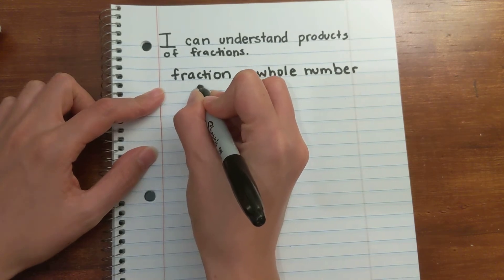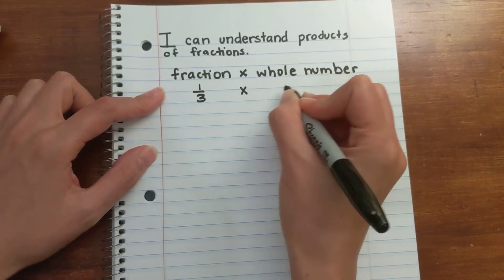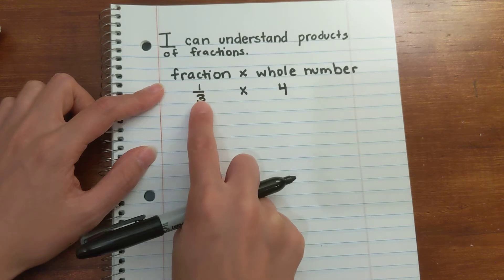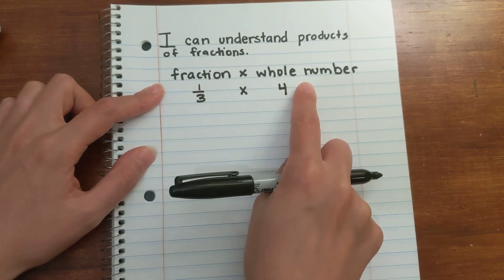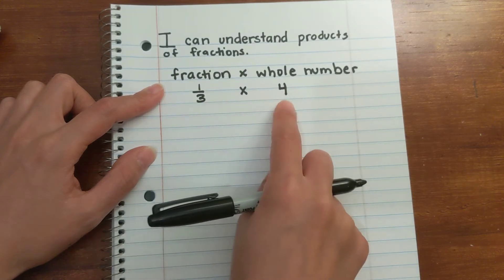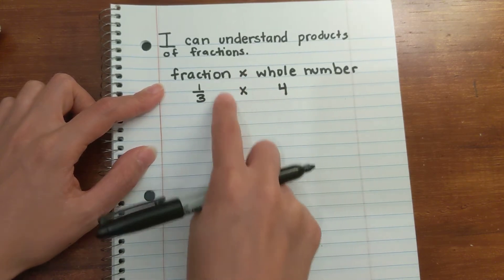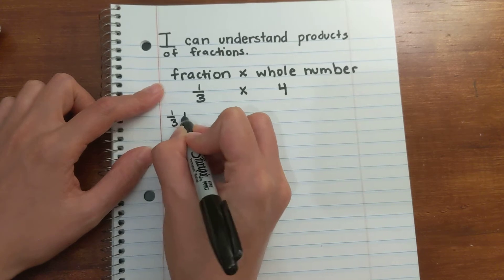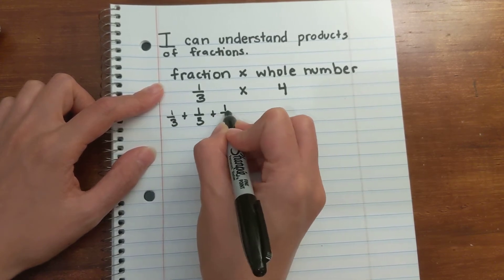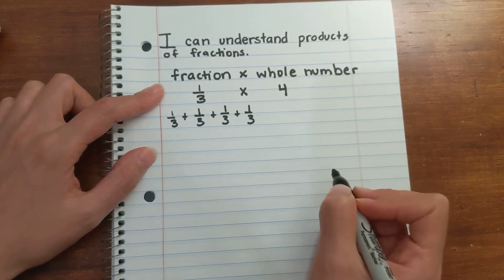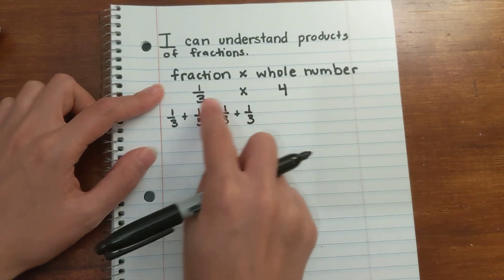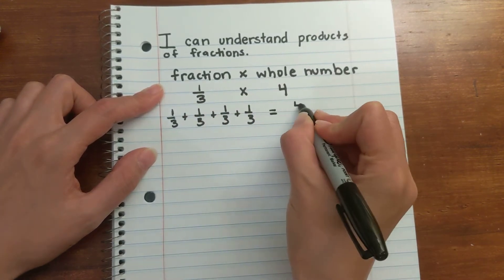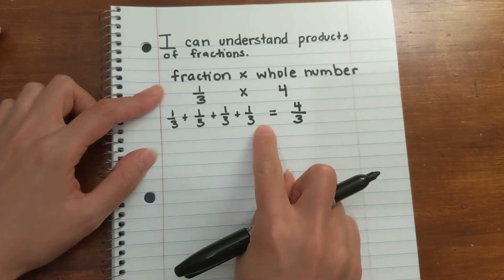Let's say we have 1/3 times 4. So 1/3 is my fraction and 4 is my whole number. I can think of a fraction times a whole number as four groups of 1/3, or 1/3 four times. We know that with multiplication and whole numbers you can think of it as repeated addition, so you can think of 1/3 + 1/3 + 1/3 + 1/3 — that's 4 times 1/3.